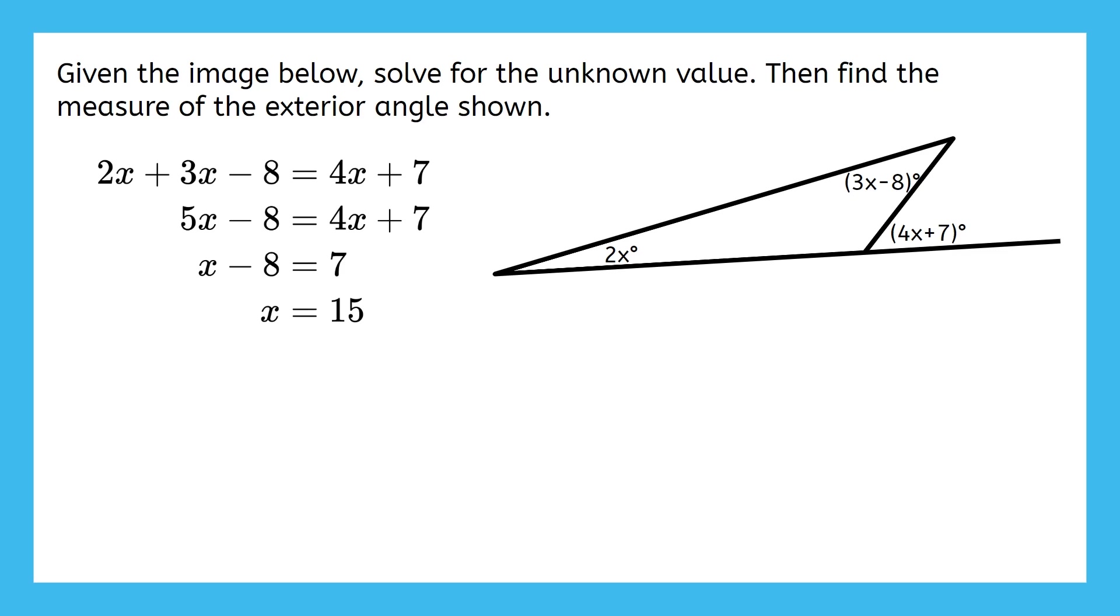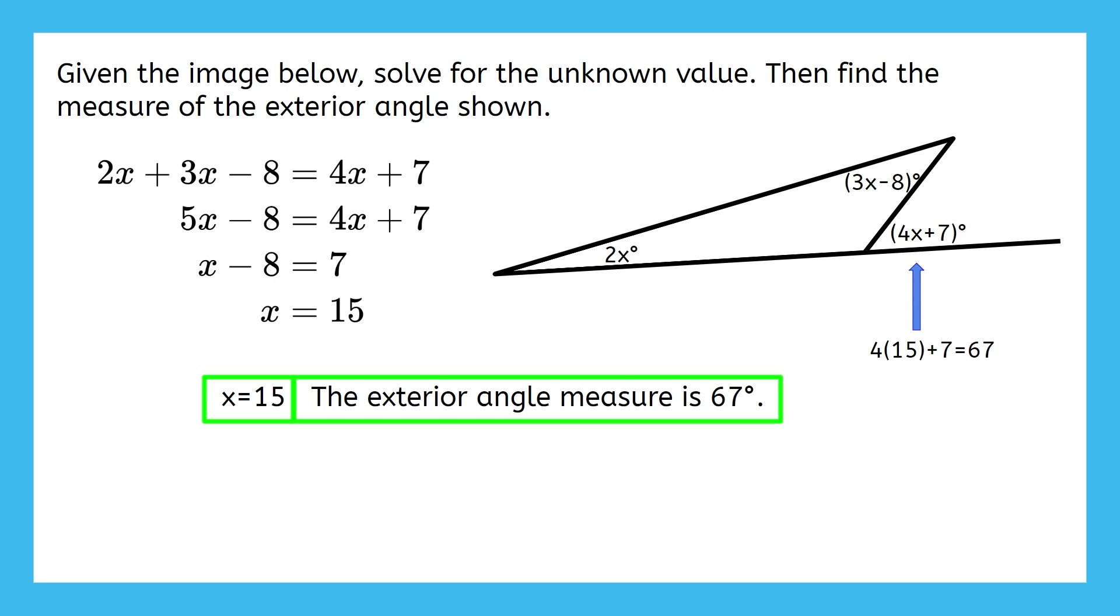So this is great. Now did we answer the question? Well, we answered part of it. We found the unknown value, but we still need to find the measure of the Exterior Angle. So let's substitute 15 back in for x and find the measure of the Exterior Angle. Pause the video now and do this on your own. 4 times 15 plus 7 gives us 67. Now we can write our final answer. x equals 15, and this Exterior Angle Measure is 67 degrees.